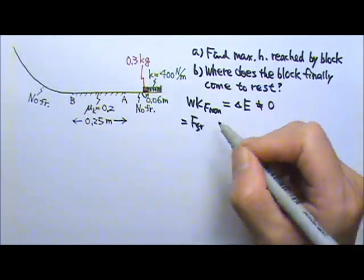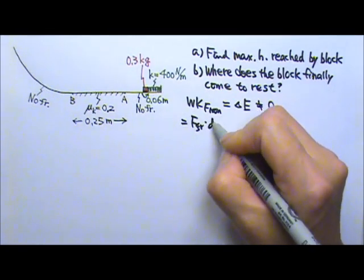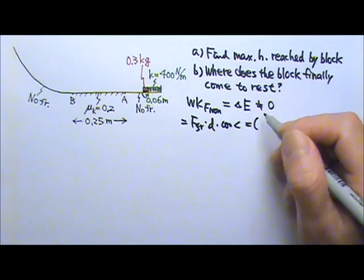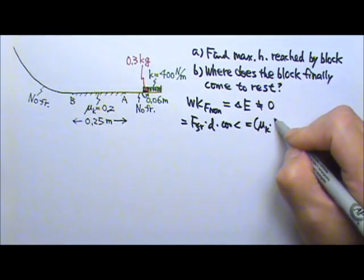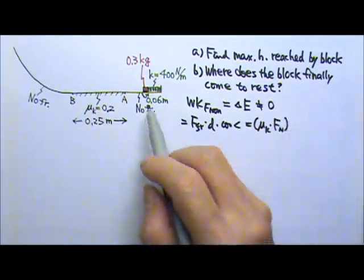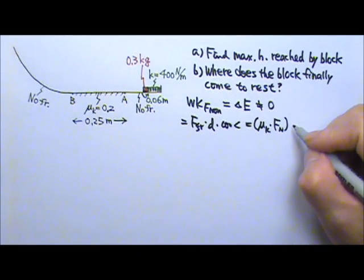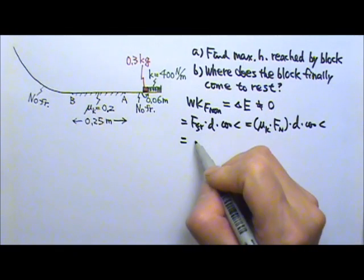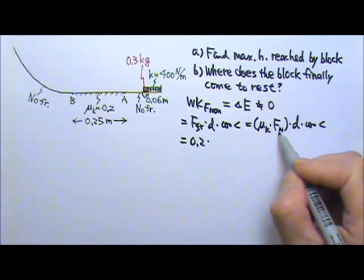The work done by friction is friction times the displacement times cosine the angle between the two. And the friction is mu k times the normal force, because it's sliding kinetic friction. So mu k is 0.2. Normal force, when the block is in this region,